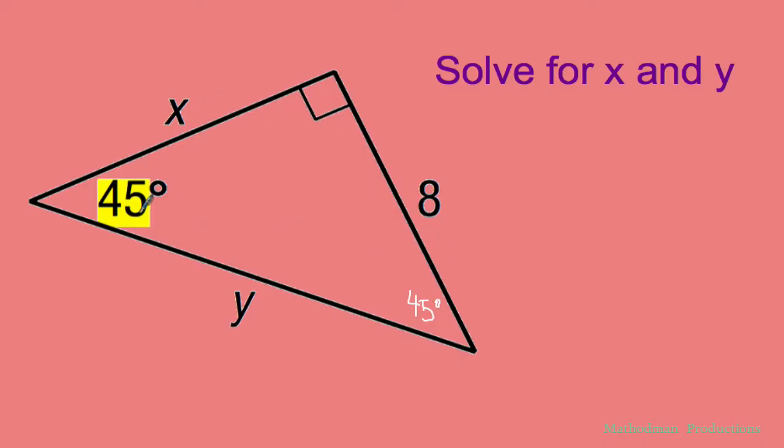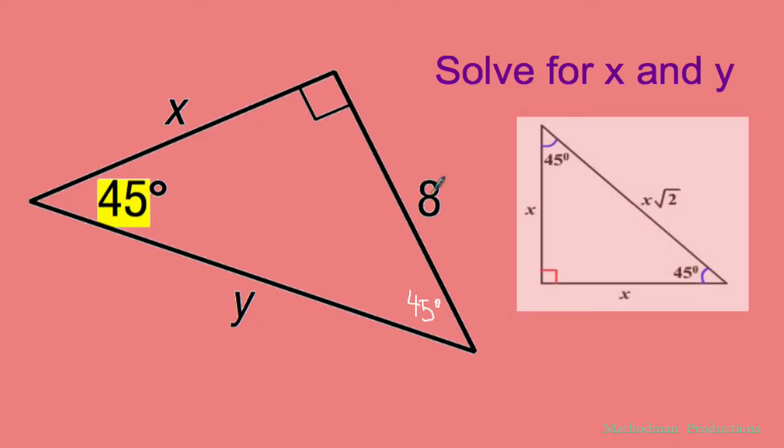So now I got that 45-45-90 triangle and I look at the legs. The one across 45 is 8, meaning the one across the other 45 degree measurement has to be 8 as well because of this relationship.